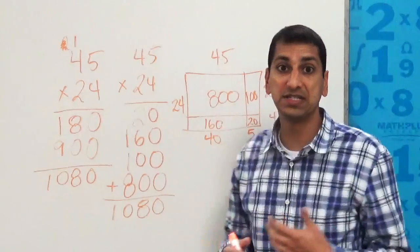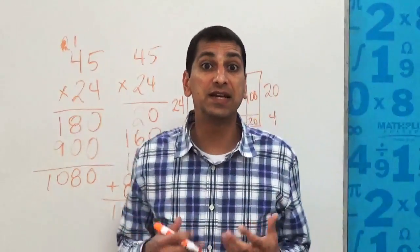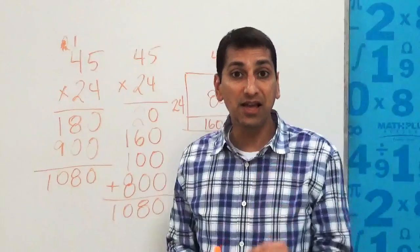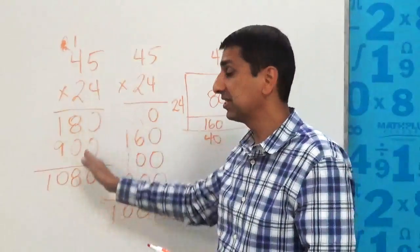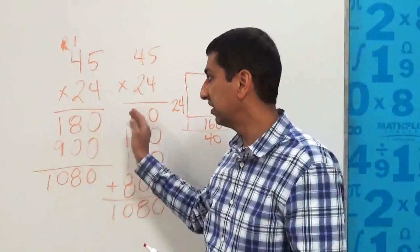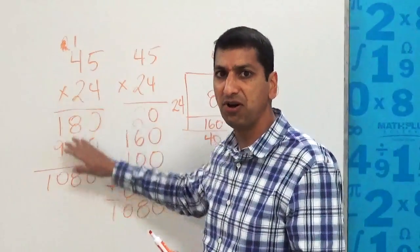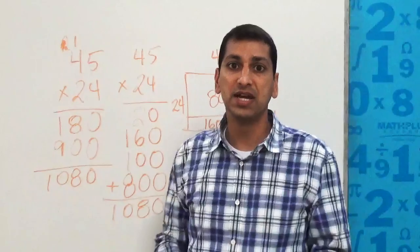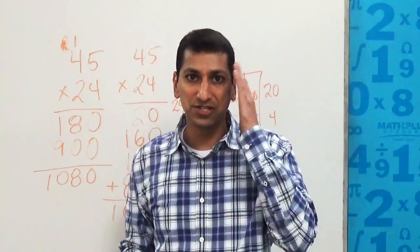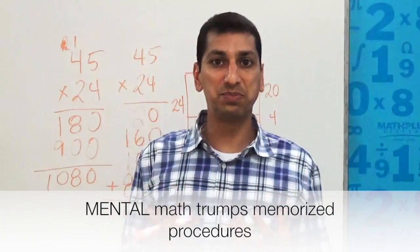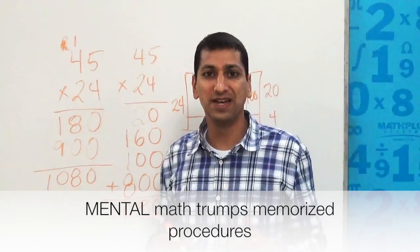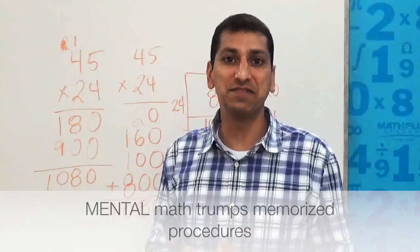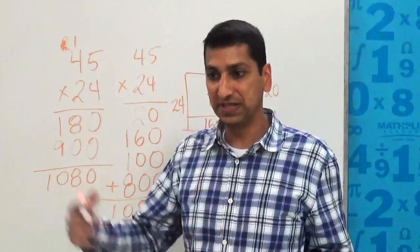And it also helps them identify at times when they don't need the standard algorithm. So an example of that would be, say we have 73 times 10. I can't tell you how many times I've seen students line that up vertically just like this and execute the algorithm and put in a bunch of zeros and go through all the steps to get a result that they should have been able to get just using their mind. If you understand place value and what 10 means in our number system, then 73 times 10 is just 730. You're just moving the decimal place.